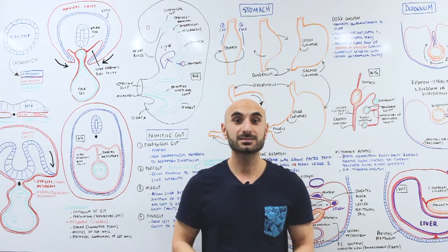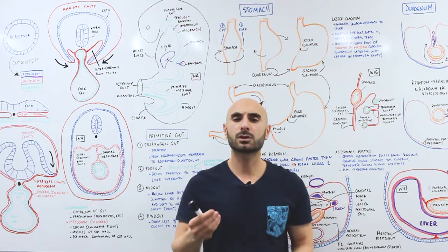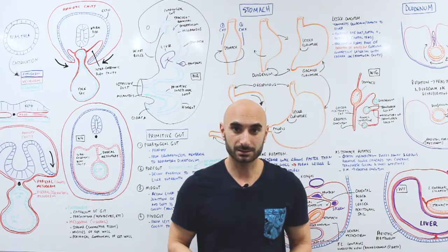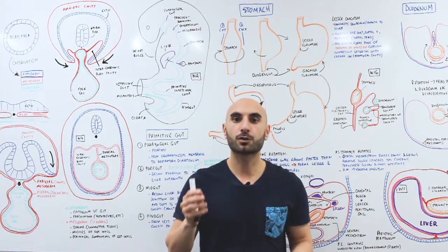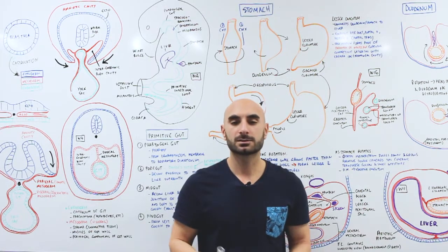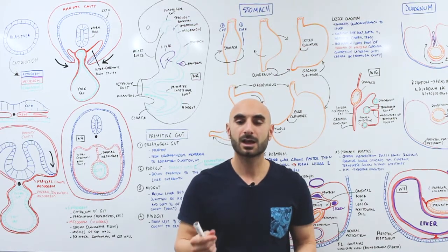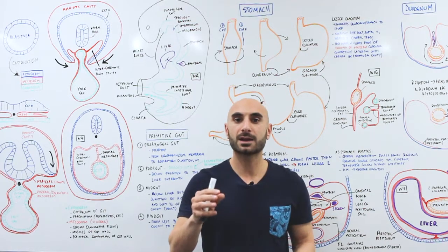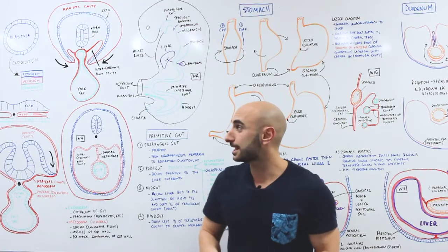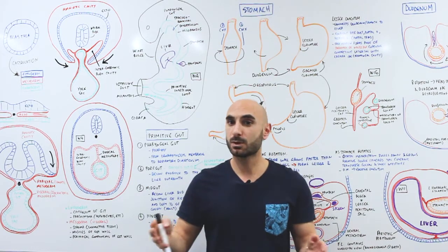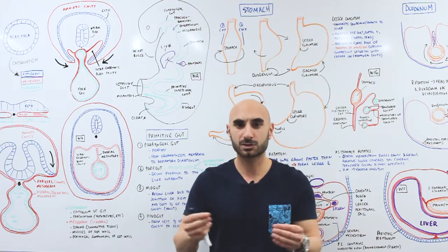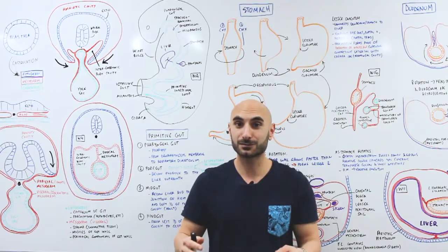Hey guys, my name is Minas and today we're going to be talking about the embryological development of the GIT. Today's video will have a focus on the foregut — that's development of the esophagus, stomach, and the upper part of the duodenum. I've broken it down so that anyone who is new to embryology should understand what's going on by the end of this video.